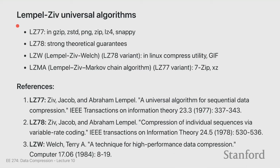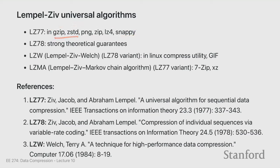LZ77, or Lempel-Ziv, is a family of universal algorithms with many implementations. They had two papers: one in 1977 called LZ77, and one in 1978 called LZ78, describing different schemes. People then made many modifications. These are used in a bunch of popular compressors: Gzip, ZStandard, PNG, ZIP, and GIF. Most common compressors today are built upon some version of Lempel-Ziv.